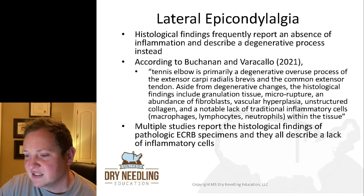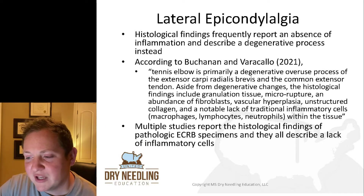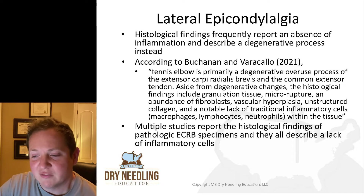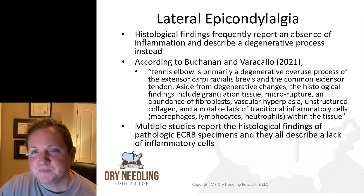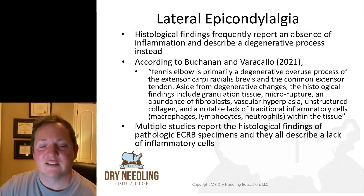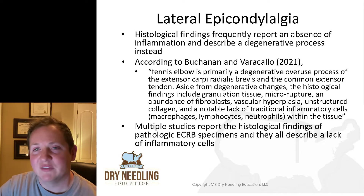The histological findings include granulation tissue, microrupture, an abundance of fibroblasts, vascular hyperplasia, unstructured collagen, and a notable lack of traditional inflammatory cells such as macrophages, lymphocytes, and neutrophils within the tissue. Multiple studies have reported histological findings of pathologic extensor carpi radialis brevis involvement, and they all describe a lack of inflammatory cells.